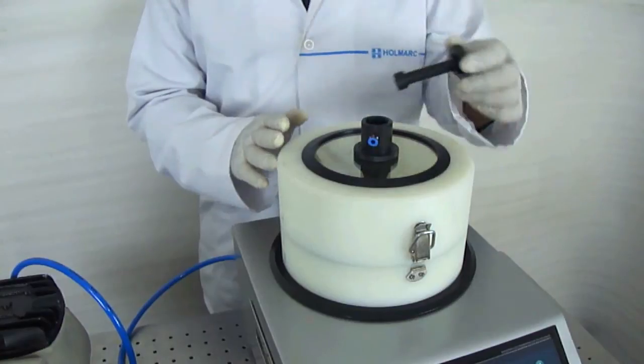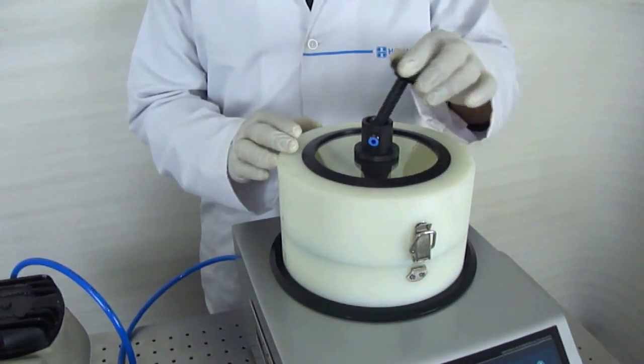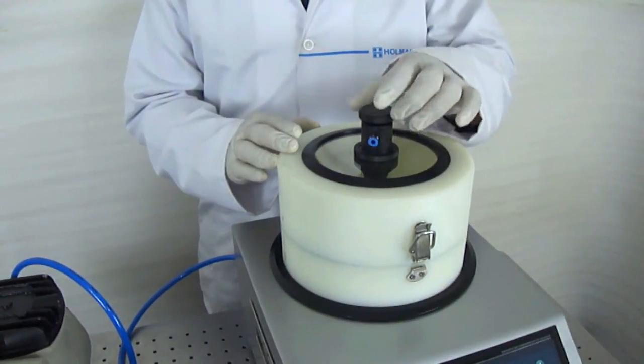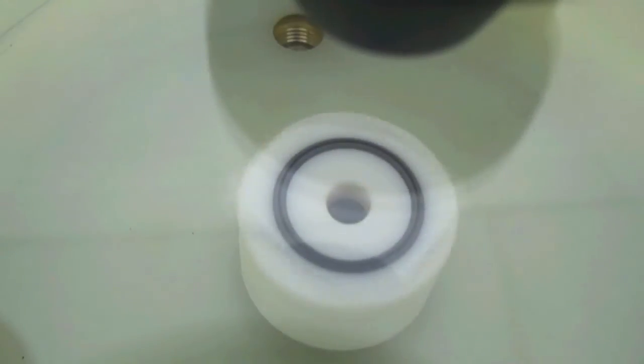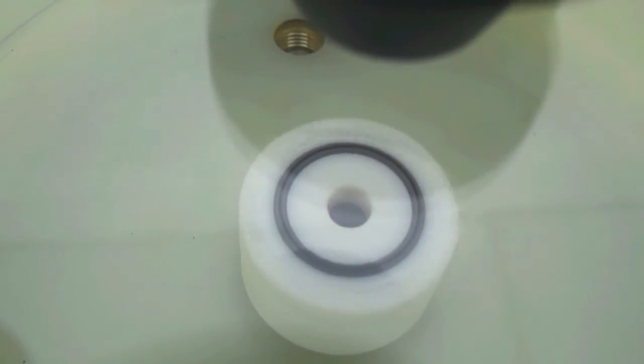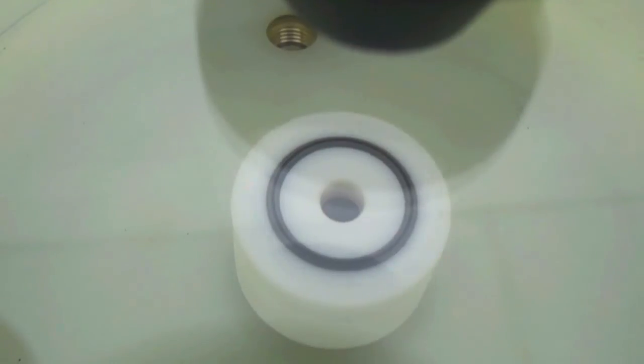A solution inlet is provided to inject the coating solution into the chamber. A transparent cover protects the surroundings by keeping the spin-off solution inside the chamber.